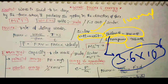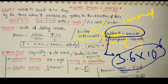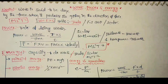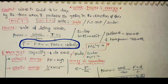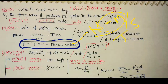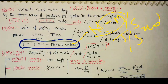Joules per second equals Newton meter per second. Newton meter is Joules, so the unit is consistent. Power is also equal to force into velocity: P = F × v. Force is in Newtons and velocity is in meters per second, giving Joules per second — same as Watts.